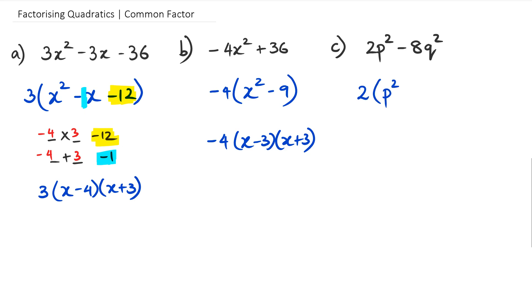And what we're left over with is P squared minus 4Q squared. And if you remember from the previous video in this series, you will know how to factorize this. Because what you have is P squared, which is a square number, and you also have 4Q squared, which is also a square number.